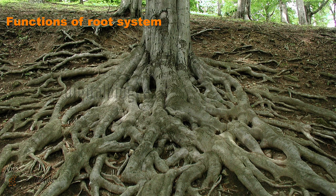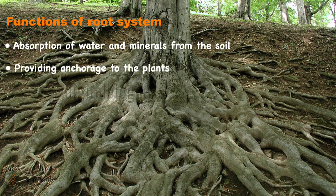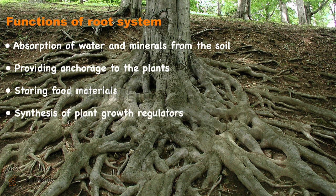The main functions of a root system: first, absorption of water and minerals from the soil; second, providing anchorage to the plant; third, storing reserve food materials — mainly carbohydrates stored in the cortex region of the root. Fourth, synthesis of plant growth regulators. For example, auxins and cytokinins are hormones which are examples of plant growth regulators, and these are synthesized in the roots.